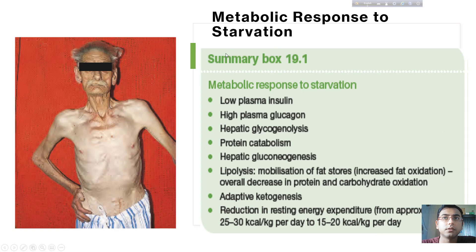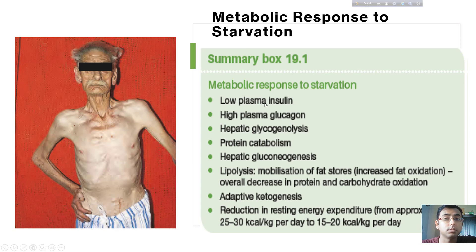There is a summary box from Bailey and Love listing key points on the response to starvation: low plasma insulin and high plasma glucagon. Due to a lack of glucose or dietary carbohydrate supplementation, there is little role for plasma insulin, so plasma insulin level becomes low. High plasma glucagon occurs because the brain and nervous system need instant glucose, so glucagon level must rise.